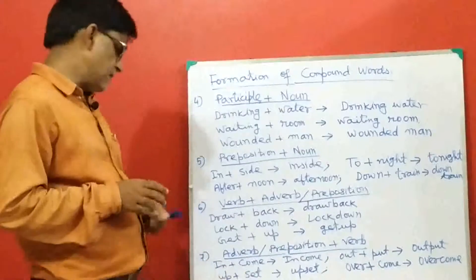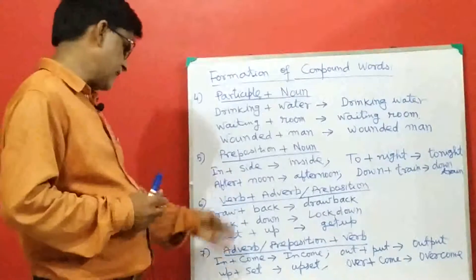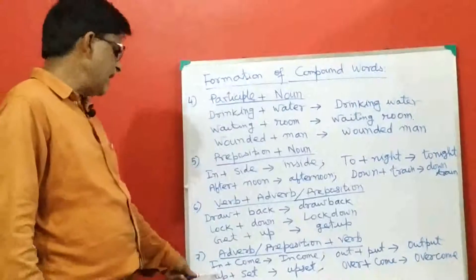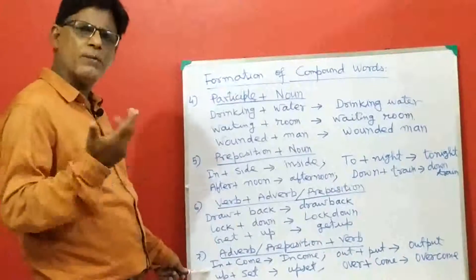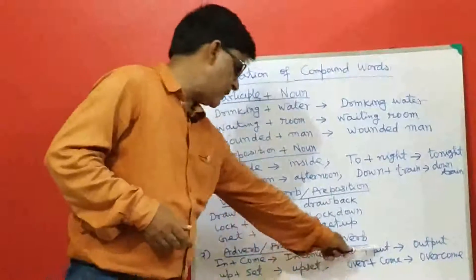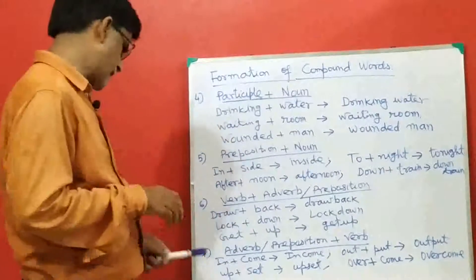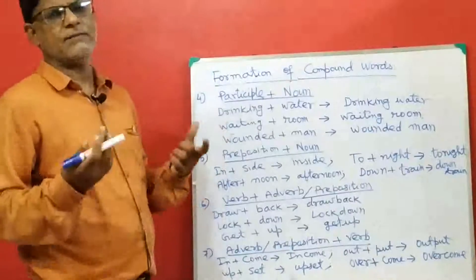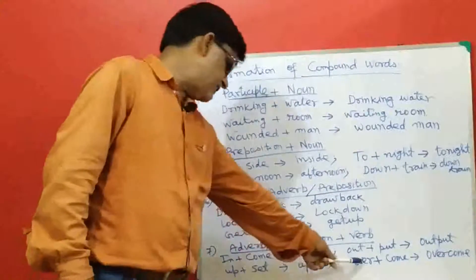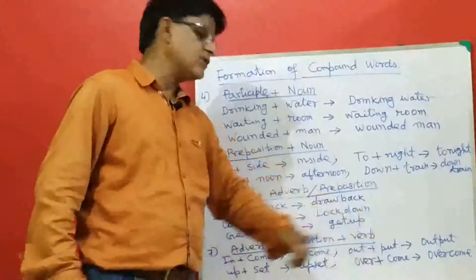And lastly, compound words are made by joining an adverb or preposition to a verb — the reverse of the previous method. For example, in plus come gives income; in may be an adverb or preposition, and come is a verb. Out plus put gives output. Up plus set gives upset. Over plus come gives overcome; over is a preposition or adverb and come is a verb.